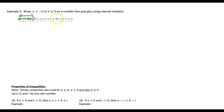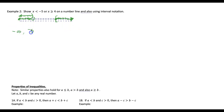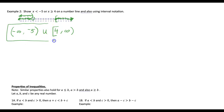x is greater than or equal to 4 would either be a closed circle or a squared bracket to include the 4 because of the equal sign. Values greater would be to the right. Looking at interval notation, we would start at negative infinity and work our way up to negative 5, but not include the 5. Then we'd also start at 4, including the 4, and go to infinity. We typically put a union in between to mean the word 'or,' and that would be our interval notation.